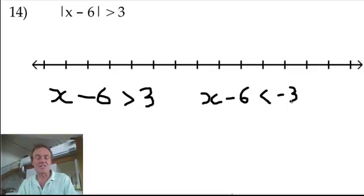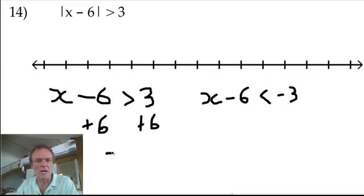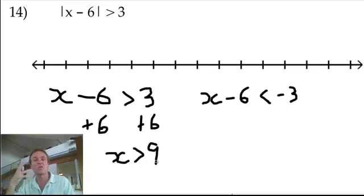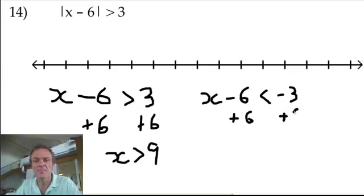That's what I've done. You're going to add a 6 to both of them, aren't you? So add 6, add 6. For this one, you have x's greater than 9. There you go. There's one option. Here, when you add a 6 and add a 6, you get x's less than 3.